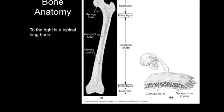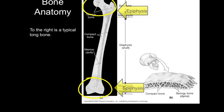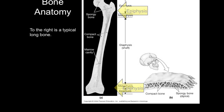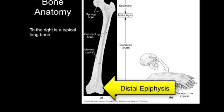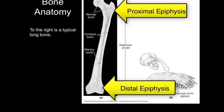Bones can be classified by their shape. First, let's look at a long bone — simply, they are longer than they are wide. At both ends are the epiphyses: one epiphysis is proximal and the other is distal. This is the femur, or thigh bone. This end closer to the knee is the distal epiphysis, and this end closer to the hip is the proximal epiphysis.